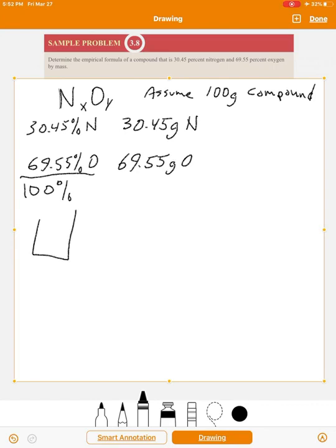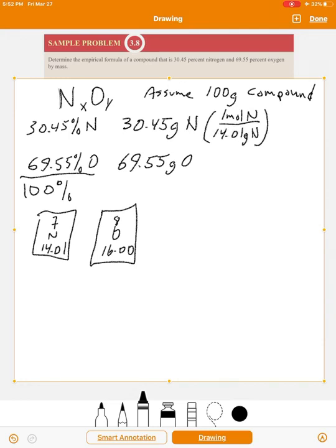So now all we need to do is look up in the periodic table these two elements - their atomic masses or molar masses. And there they are. Nitrogen weighs 14.01 grams per mole. Oxygen weighs 16.00 grams per mole. So I'm going to write it this way. One mole of nitrogen is 14.01 grams of nitrogen. That's the molar mass. Same thing for oxygen - one mole of oxygen is 16 grams of oxygen.